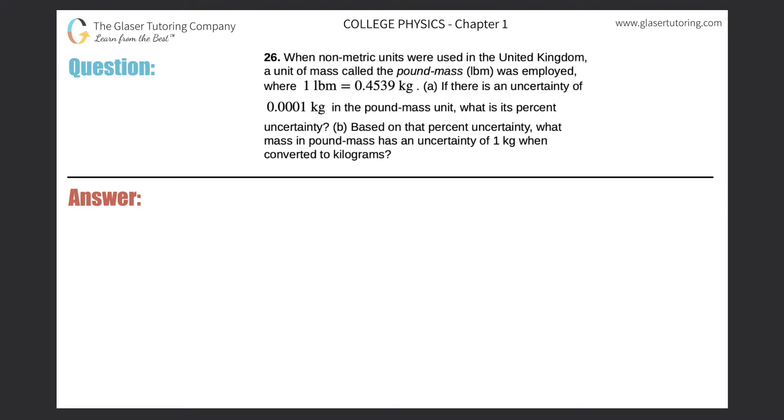Number 26, when non-metric units were used in the United Kingdom, a unit of mass called the pound mass was employed, where one pound mass is equal to 0.4539 kilograms. If there is an uncertainty of 0.0001 kilograms in the pound mass unit, what is its percent uncertainty?